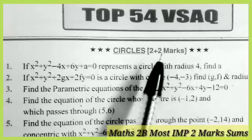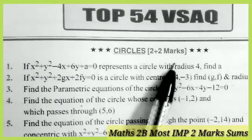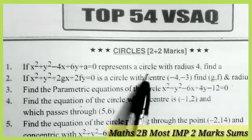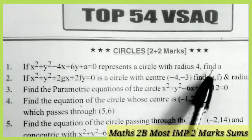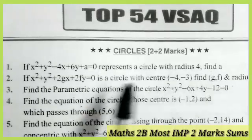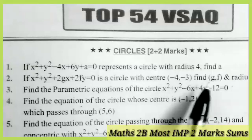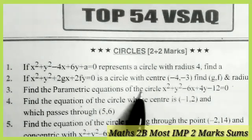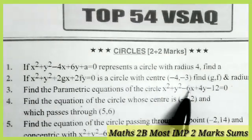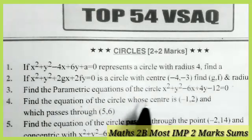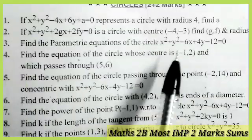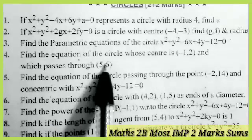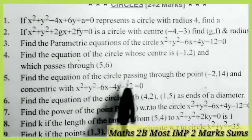From the topic circles, these are the 2-marks questions. The first one: if the circle represents a circle with radius 4, find A. Next one: center is given, find the G, F values and radius. Next one: parametric equations of the circle. Next one: find the equation of the circle where center is given and the circle passes through the point (5, 6).